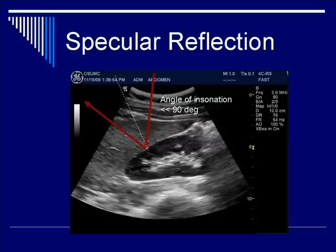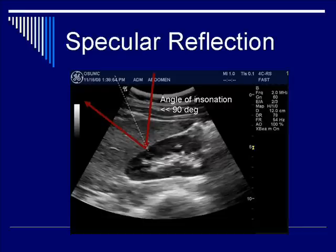So if you sum up all the ultrasound beams reflecting off of the surface, there is much less reflection going back to the receiver. Therefore, with this decreased angle of insonation that is very far from 90 degrees, you end up having a much more hypoechoic and not hyperechoic reflection. And this is a prime example of specular reflection — it's highly dependent on angle of insonation.